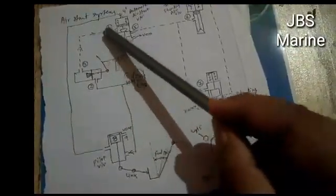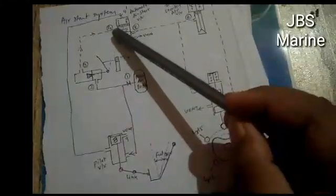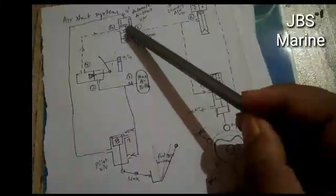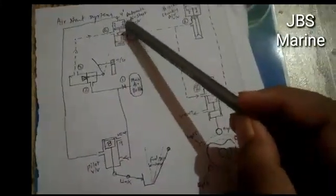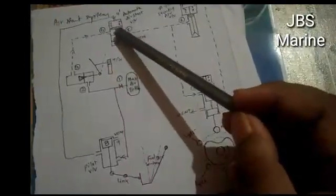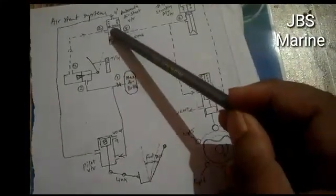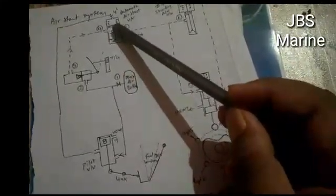And again it will go at port 4 and from there it will act beneath the piston of the automatic air start valve. Now this is balanced. What is happening here is this 30 bar air pressure cannot lift this piston up.